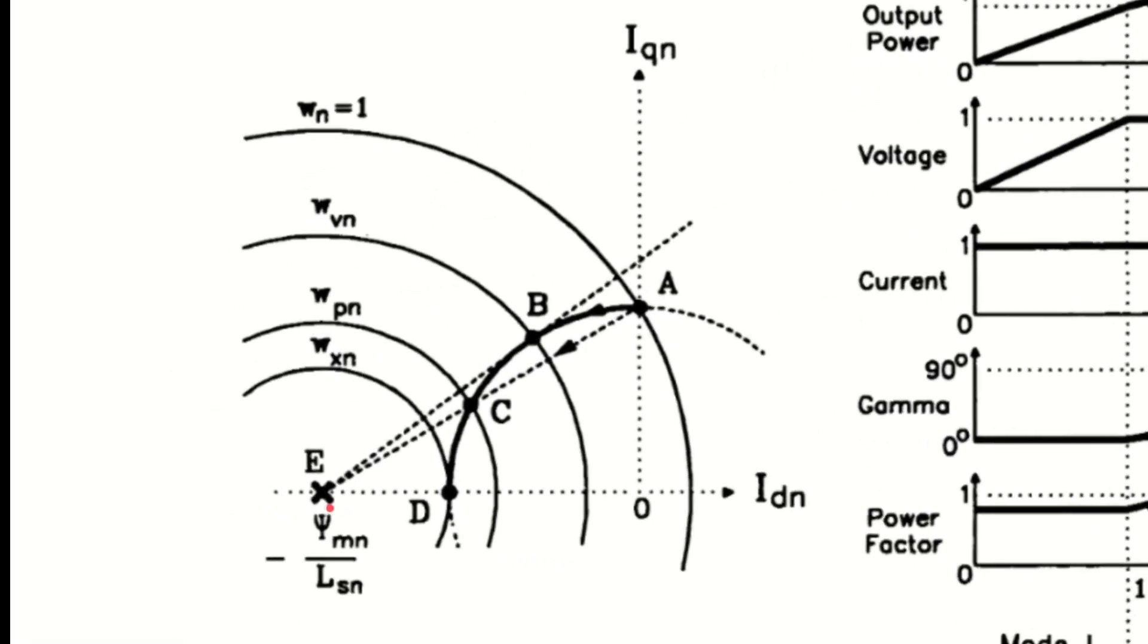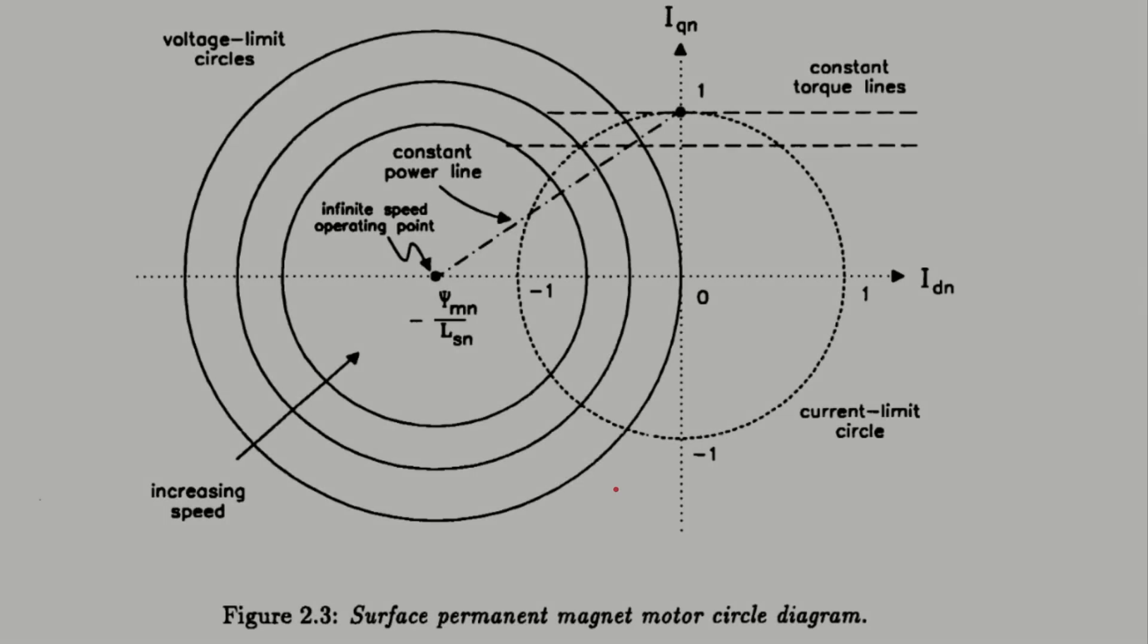In some motors, however, this equality isn't practical, because the required current is too high. So for those motors, we can continue shifting the current vector towards the negative D axis, and that'll keep lowering our voltage amplitude.